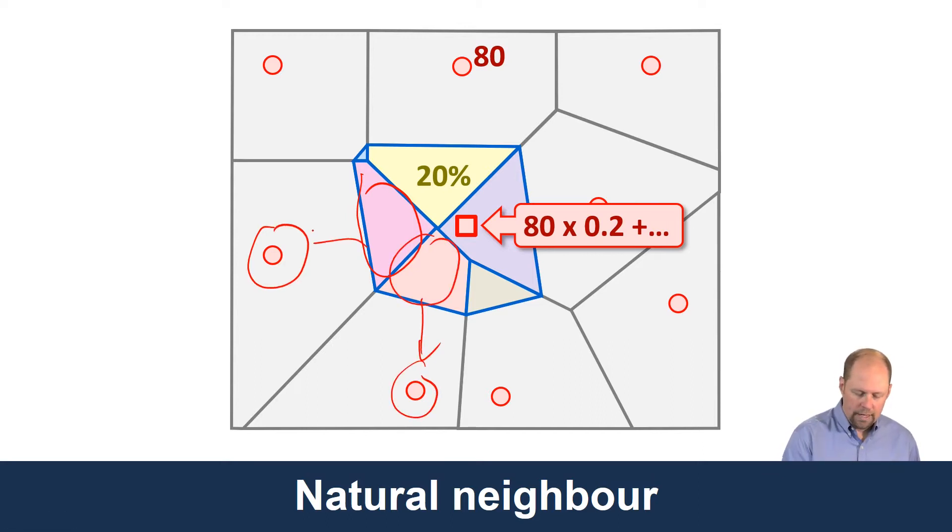We repeat that for each polygon and each sample value. We measure the areas of each polygon, look at the proportion of that area to the original Thiessen polygon, multiply by that, and add them all up. That gives us a weighted estimation of what that point value would be, using essentially the distances from each point as that weighting.